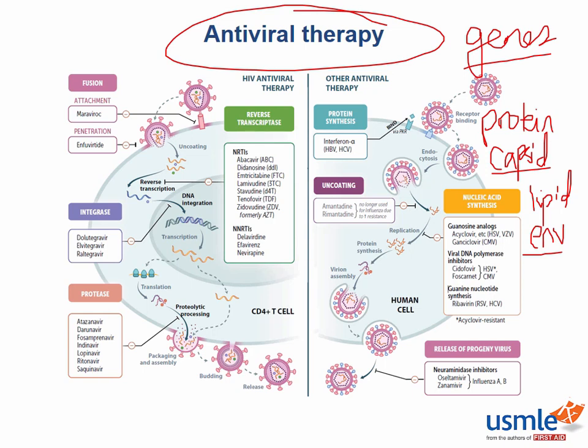An important concept about viruses is that they rely heavily on human cellular machinery to reproduce. They use our ribosomes to translate their capsid proteins, and they use our plasma membranes as their envelopes. This feature of viruses makes them hard to treat and prevents us from using any of our other antibiotic therapies.